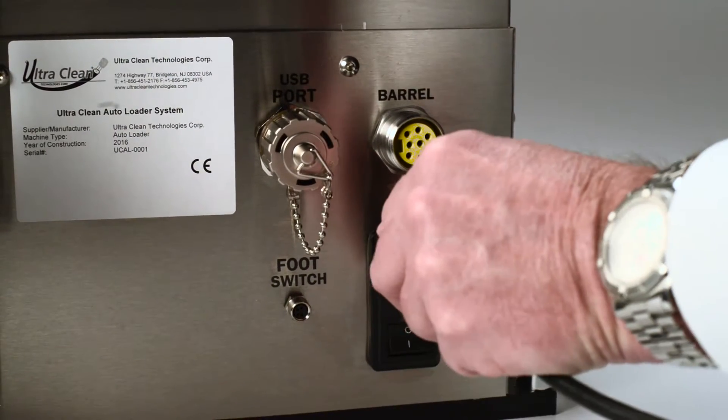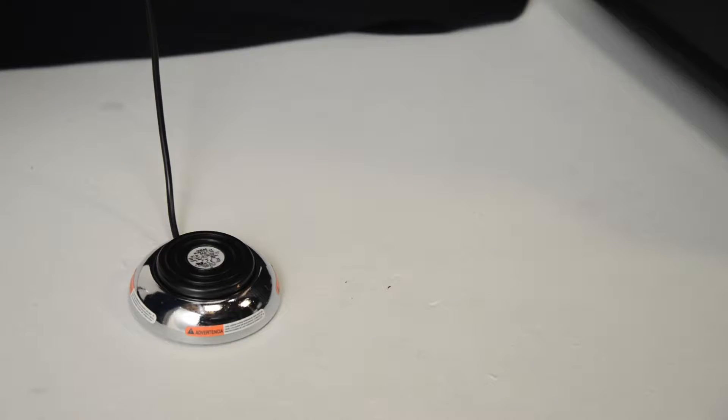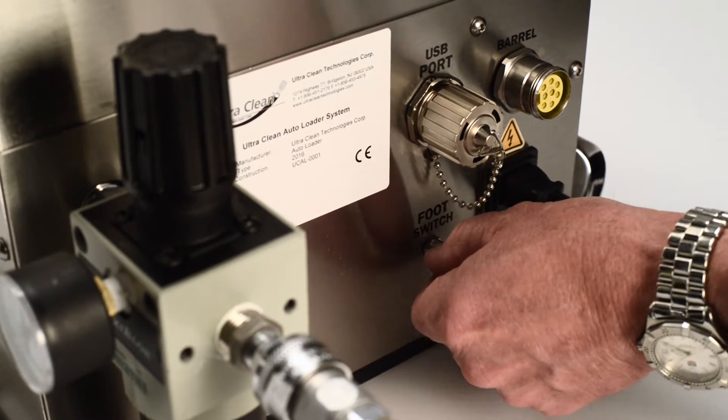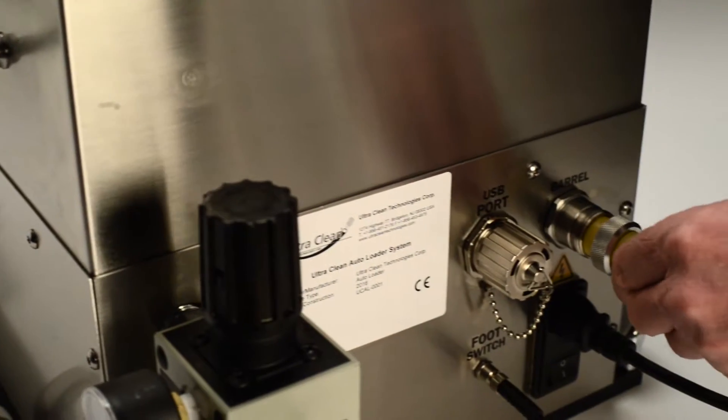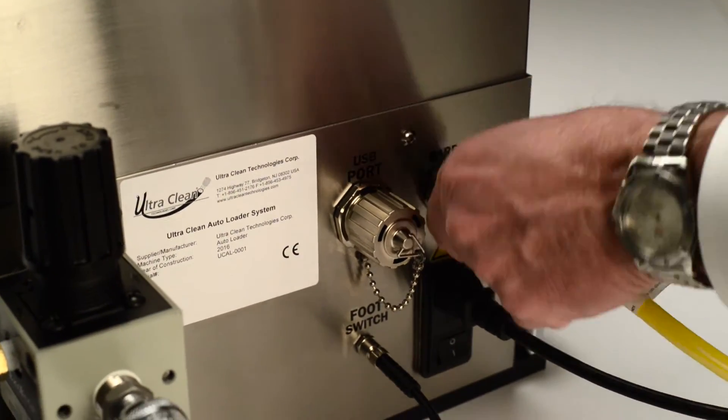Plug the power cord into the unit and a wall outlet. The electronic footswitch and the containment system both have electrical connections that connect on the back of the system. Setup is now complete and the system can be powered on for immediate use.